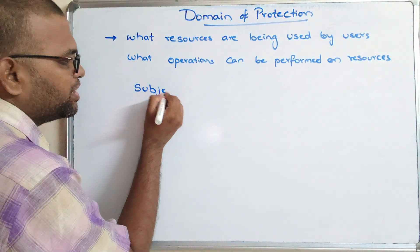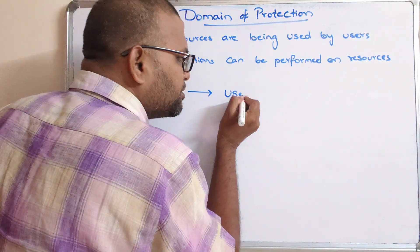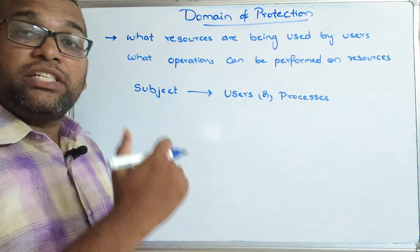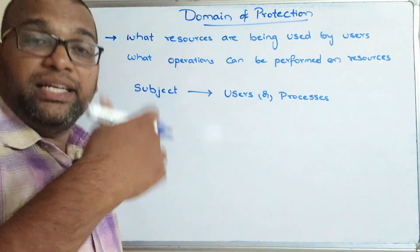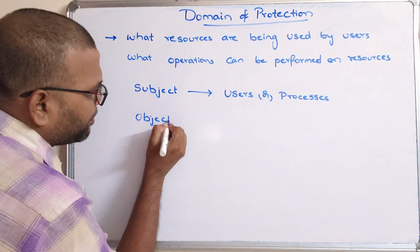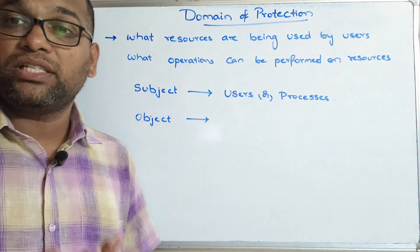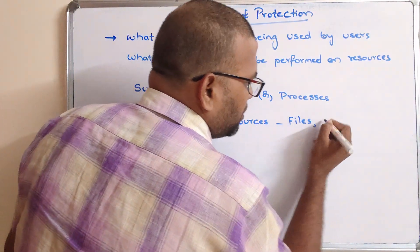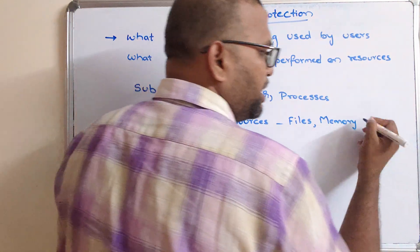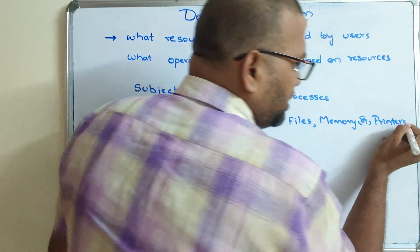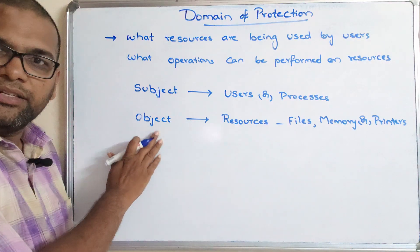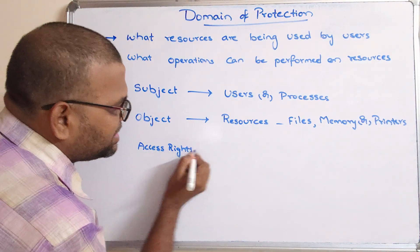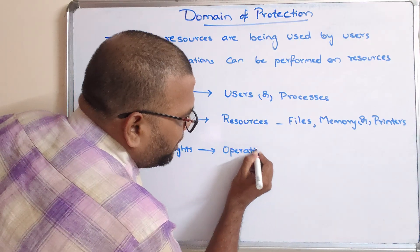Let us go with the basic terminologies in domain of protection. The first one is a subject — a subject is either users or processes. Users or processes will use the resource during execution. The next one is an object — object means the resources being used, such as files, memory, printers, etc.